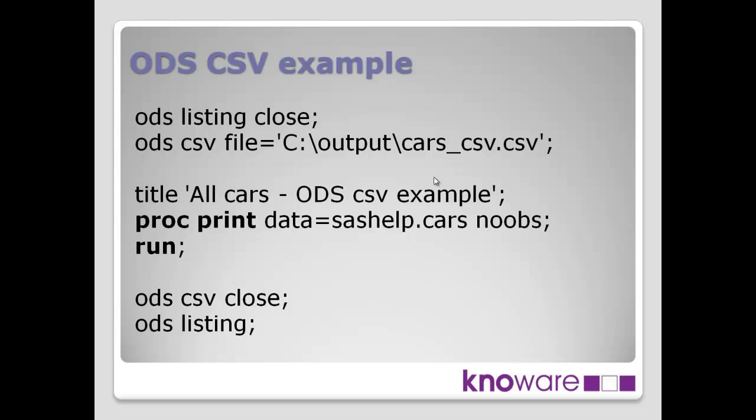Let's have a look at a couple of examples. With the CSV example, it's very straightforward to use. If you haven't used ODS before, these ODS statements are how you control ODS. Our first line at the top is ODS LISTING CLOSE. What that's doing is closing our current destination, which is typically the listing output that goes to your results window — the output window in Display Manager, or the results window in Enterprise Guide. This is saying we don't want the output to go there anymore. The second line is ODS CSV.